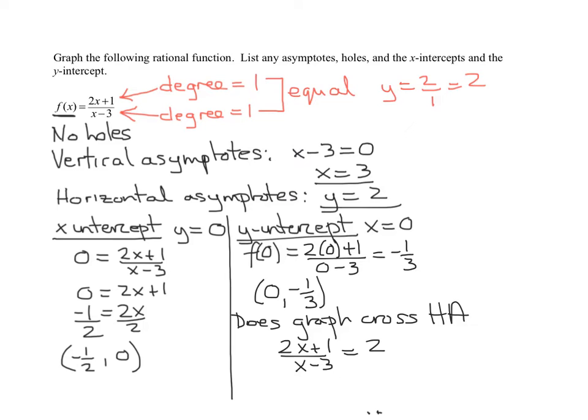So see if this is true. And what's the simplest way to solve an equation that looks like this? Cross multiply. So 2x plus 1 times 1 has to equal 2 times x minus 3. Running out of room here.